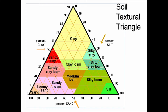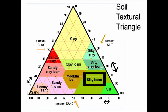Down here in Dane County, we have a lot of silt loam soils, which tend to have maybe 10–15% clay, 10–15% sand, and 70–80% silt.